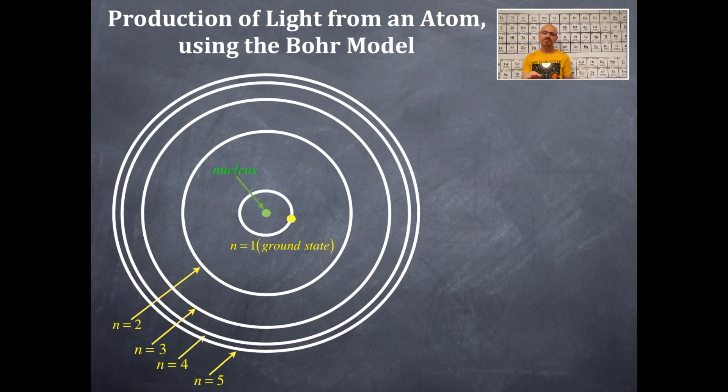Hopefully you can see that. So, for example, the distance between n equals 1 and n equals 2 is very big. The distance between n equals 5 and n equals 4 is very short. So, that's very important in our Bohr model of the atom.